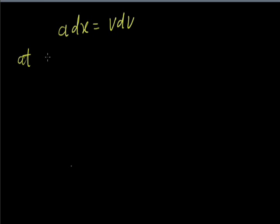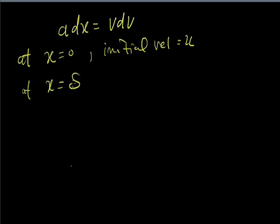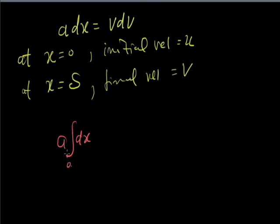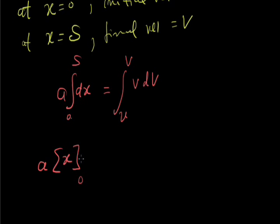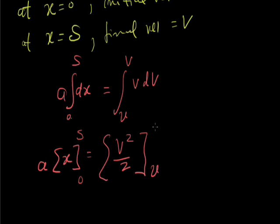At displacement x equal to 0, the velocity is the initial velocity u, and at x equal to s, the velocity is the final velocity v. Integrating a dx from 0 to s on the left equals integrating v dv from u to v on the right. Integration of dx is x from 0 to s, and integration of v is v squared by 2 from u to v.